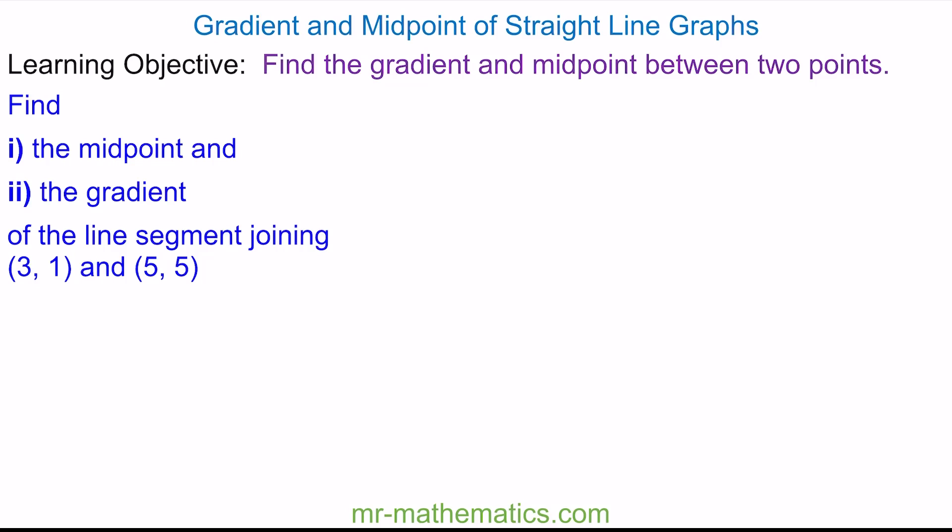Welcome to our lesson on finding the gradient and the midpoint between two coordinate pairs. We're going to begin by finding the midpoint between (3, 1) and (5, 5), and we'll do this by sketching the two points as a line segment.